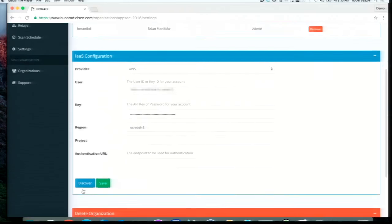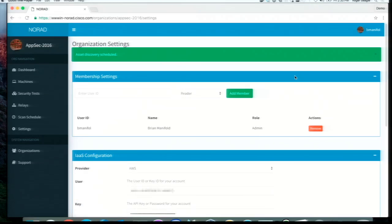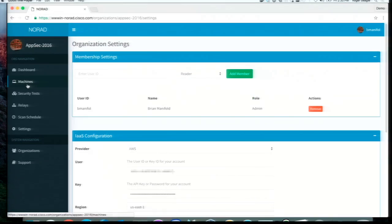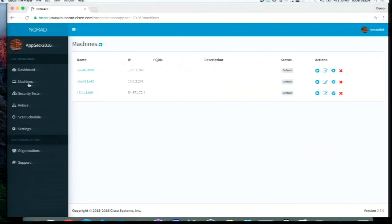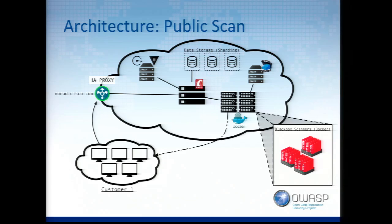We've saved the credentials. Now we'll hit Discover — it'll kick off a job to reach out to AWS and pull in all the information. Going back to our machines, we can see we've pulled in three machines: the web server, the SSH server, and a third one we'll discuss in a minute. Now that we've got our machines in NORAD and want to start scanning them, we'll start with the public asset — the machine that has SSH access. You send a request to norad.cisco.com to the API to tell it to scan a given machine or organization, that command goes down to the Docker cluster, the cluster spins up a container, hits the asset, and stores the results back up in the API.